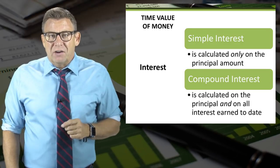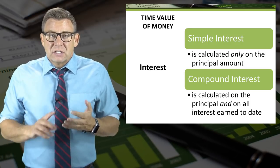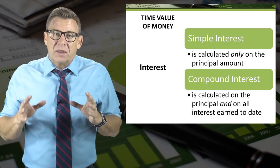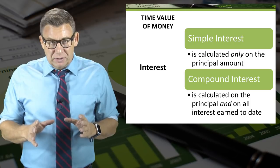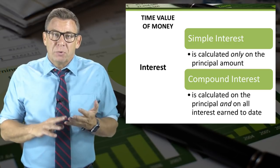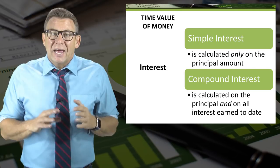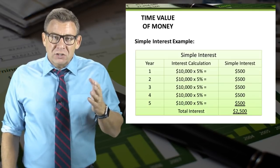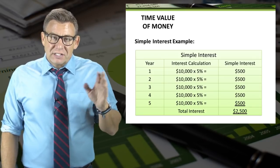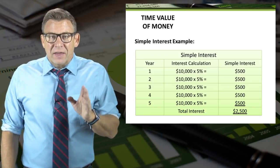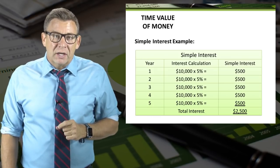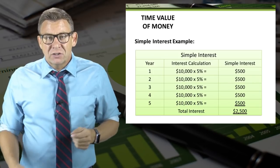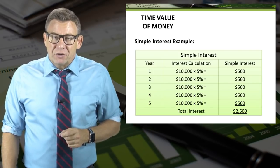Generally, there are two ways to calculate interest. Simple interest is when interest is only calculated on the principal amount. As you can see, that $10,000 earning 5% annually results in $500 of interest per year. Over five years, that's $2,500 of interest earned.